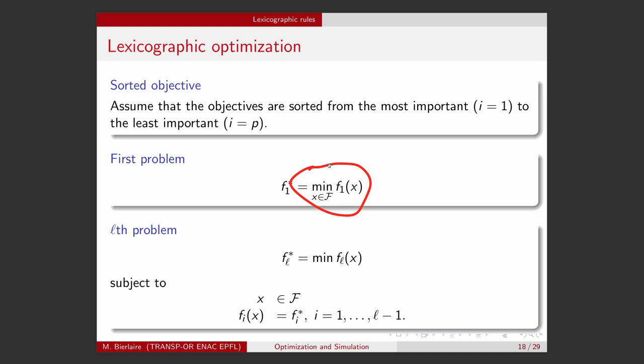And now, for the second problem, we will minimize the second objective function under the constraint that the value of the first one should be the same as the optimal value that we have obtained first. And then, we do the same for the third, and for any problem L, we do the same. So, we minimize the Lth objective function, subject to the fact that x, of course, must be feasible, but that the value of the previously optimized objective functions are equal to the optimal value.